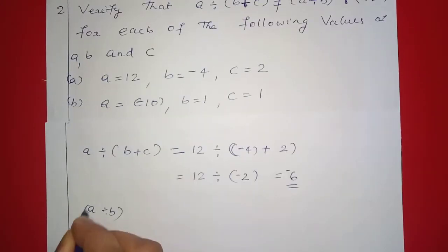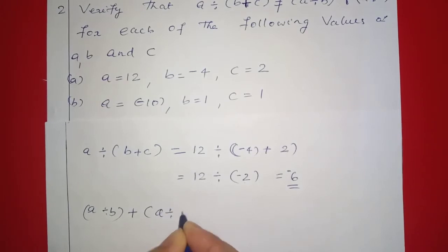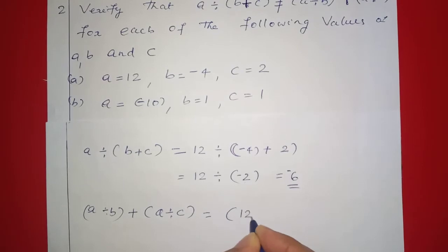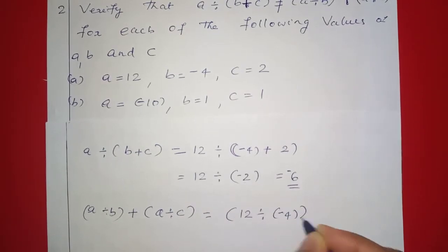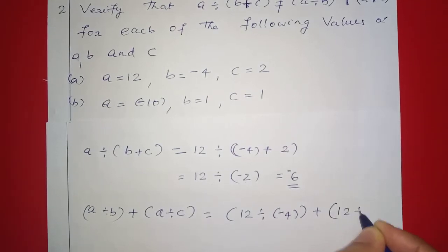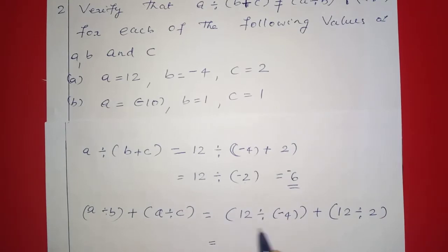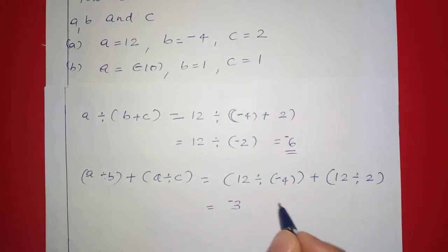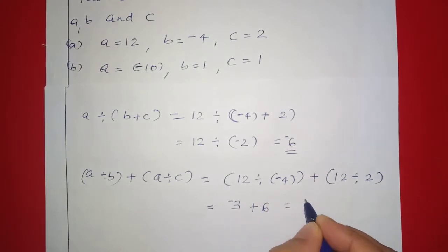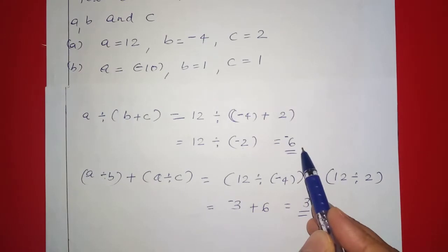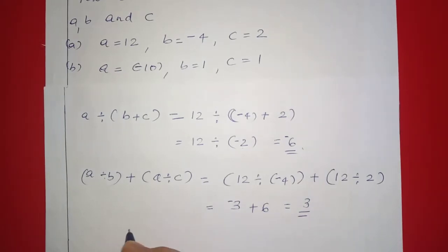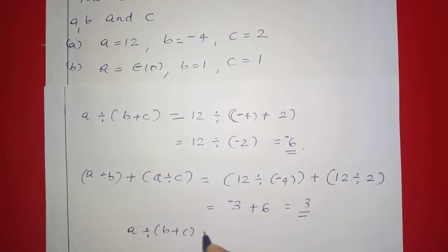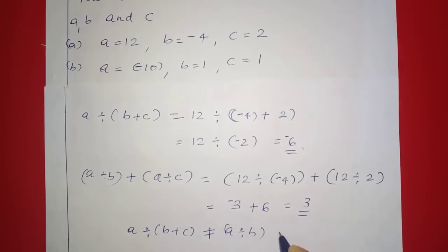A division B plus A division C is equal to 12 division negative 4 plus 12 division 2. That is equal to negative 3 plus 6, which equals positive 3. So left hand side is negative 6 and right hand side is 3.